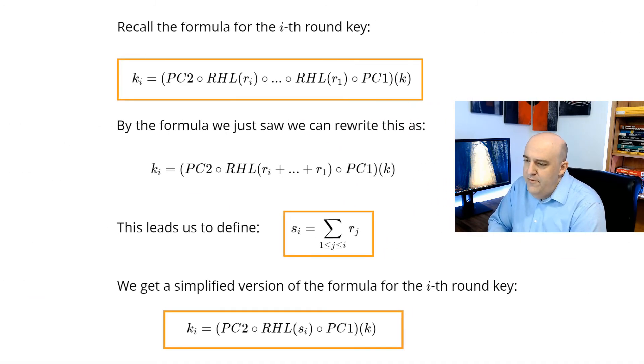Now just recall that we have a little formula for the i-th round key. K_i is PC2 composed with RHL of r_i, down to RHL of r_1 composed with PC1. But now just using that little additive formula that we saw, when we compose all of those RHLs, we can just write that as a single RHL and just add up the values of r_i. So we get that just to be RHL of r_i plus all the way down to r_1. Now let's just call that s_i. s_i is the partial sum of the r_j's. And then we get a nice little clean formula for the i-th round key. It's just PC2 composed with RHL of s_i composed with PC1 of the original key. So this way we express each round key as a composition of three P boxes.